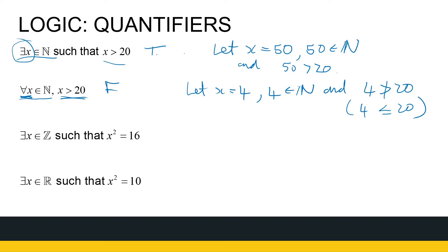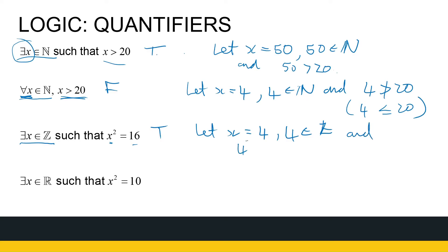There exists an integer that if I square it, I get 16. We know that. Let x be equal to 4 — x could also be minus 4. 4 is an integer, so it meets the requirements. And 4 squared is equal to 16.